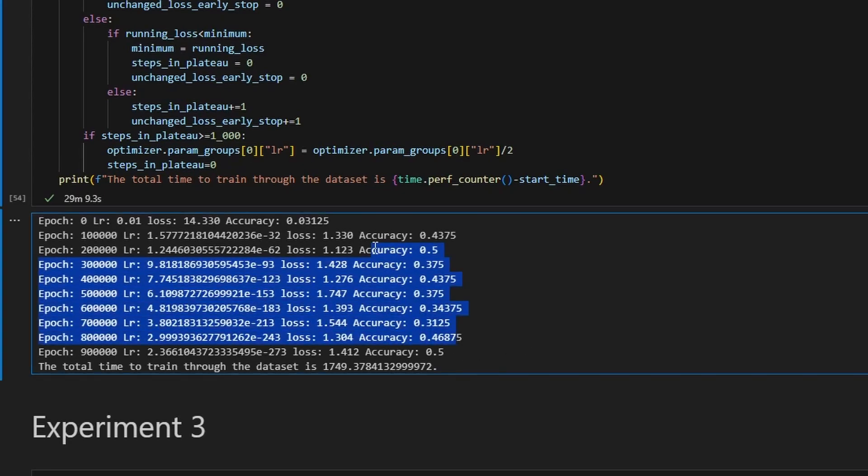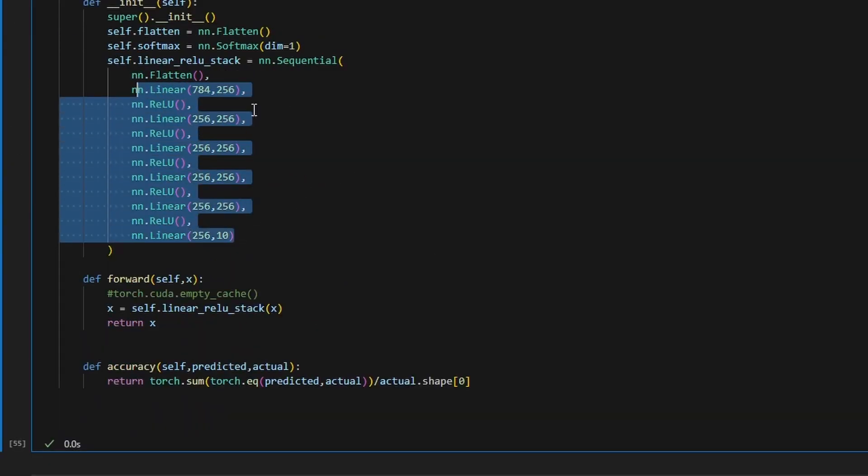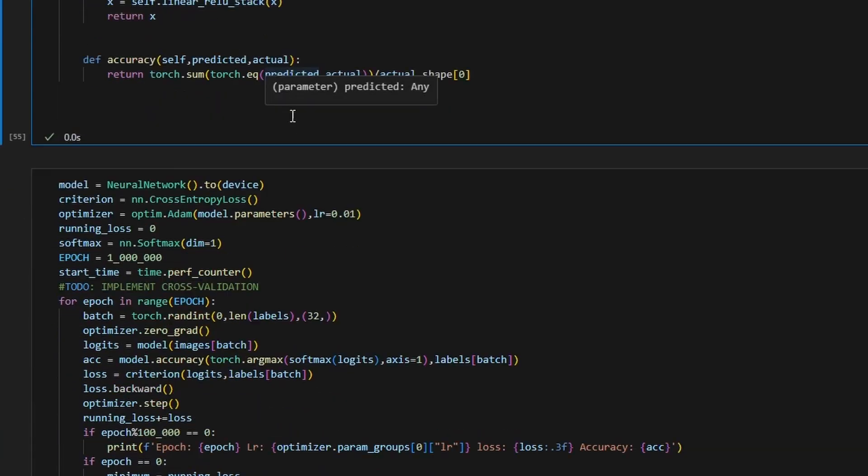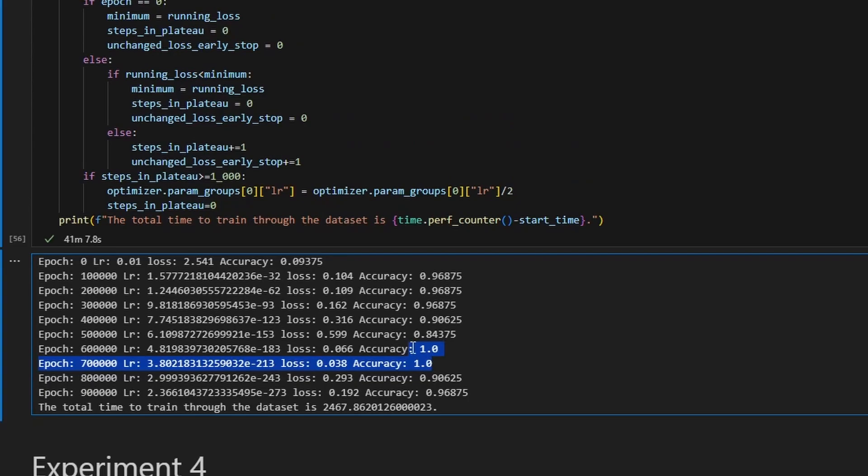But the third model did, I think, the best. I had numerous hidden layers here using the rectified linear unit activation. The results were great. I had an accuracy of one. This loss in the cross-entropy being higher than zero means that there was a probability that it could have been a different class, but it still chose the correct class regardless.